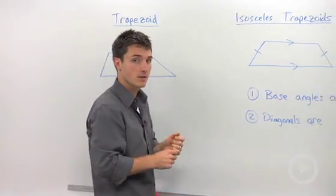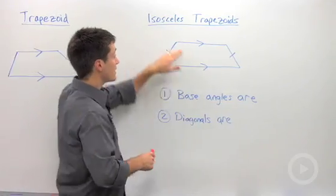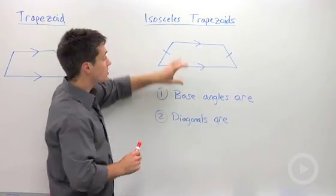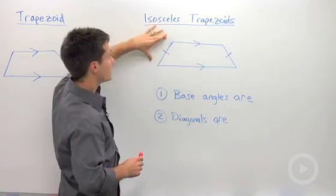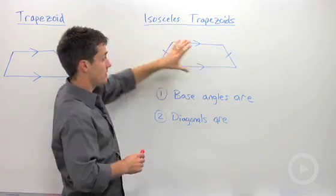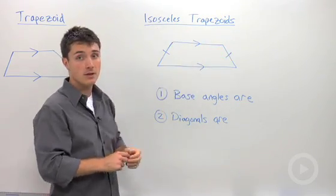There's a more specific example of a trapezoid, and that's an isosceles trapezoid, which means you not only have one pair of parallel sides, but these legs are also congruent. So the non-parallel legs are congruent.